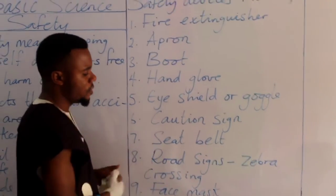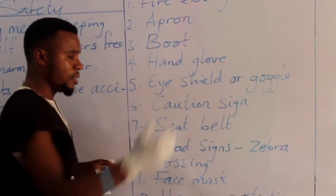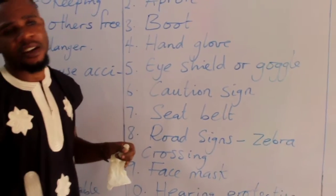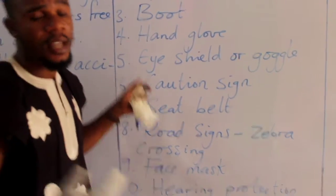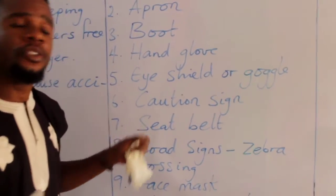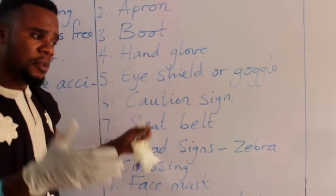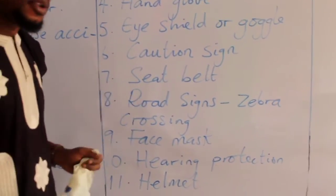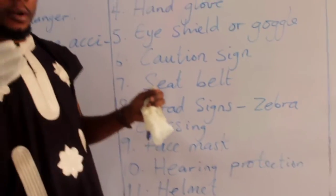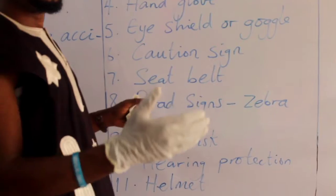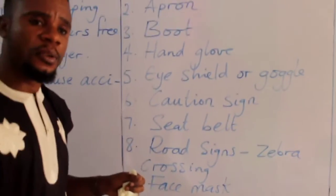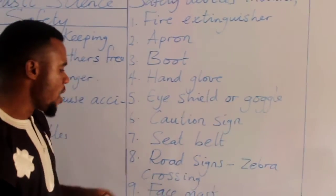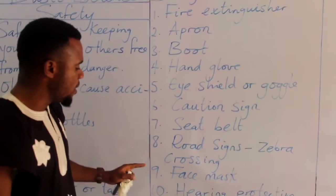Road signs. Zebra crossing. You don't go to the road and start crossing without looking left or right. Remember we have a zebra crossing — you stand there, and when it is time you carefully walk across, and vehicles will wait for you because that is the law.